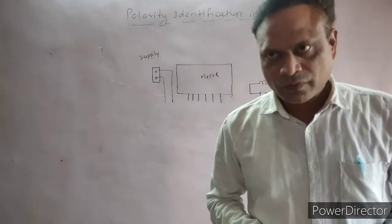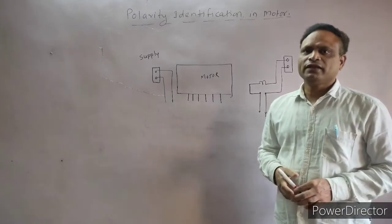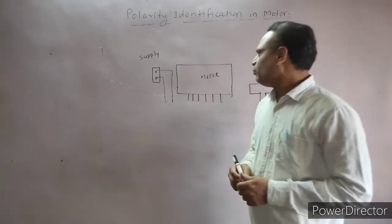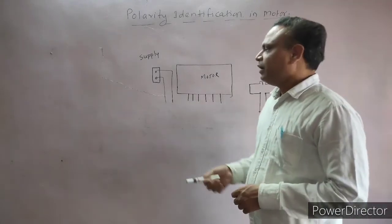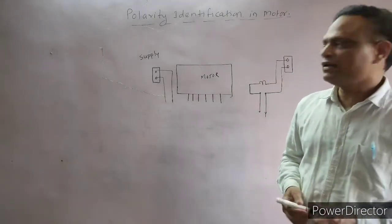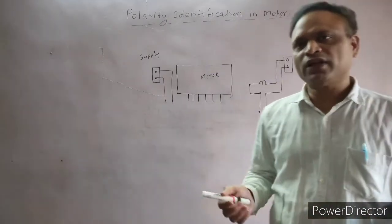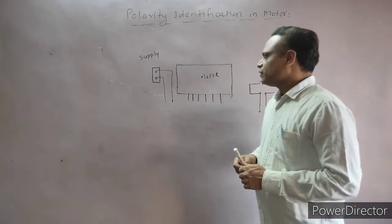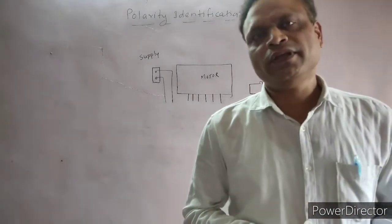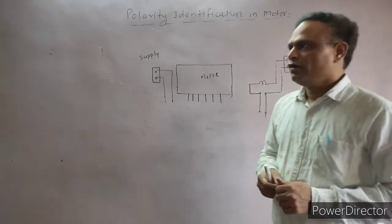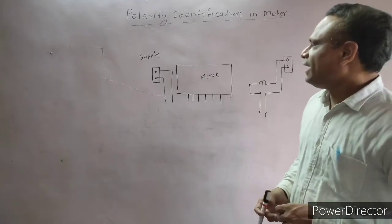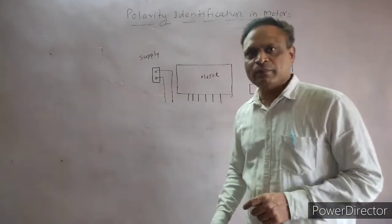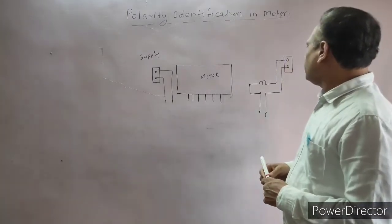Welcome to AS Educational Channel. Today we will see the method of finding the unknown polarity of coils from a motor. We have six wires coming out from the motor. The motor is star connected and we don't know which terminals belong to which coil. To find out, we will use a series lamp, and for identification of polarity, we will use a power supply.